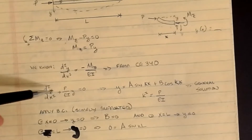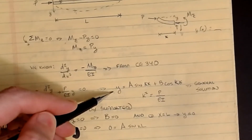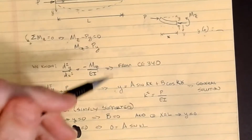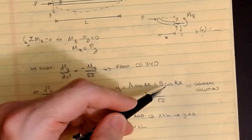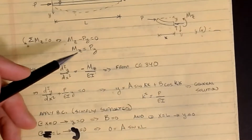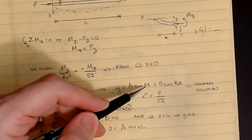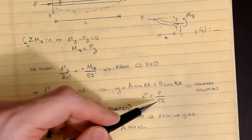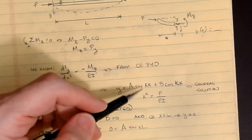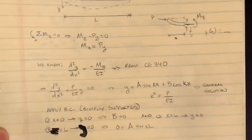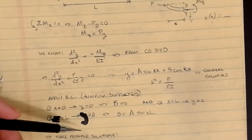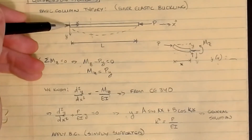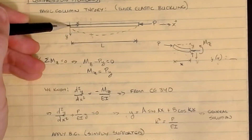The general solution to this ODE is y(x) = A·sin(kx) + B·cos(kx), where k is a constant and k² = P/EI, so k equals the square root of P/EI. Like any general solution, we must apply boundary conditions to solve for the constants A and B. For a simply supported column, at x = 0 the deflection y = 0, and at x = L the deflection y = 0.